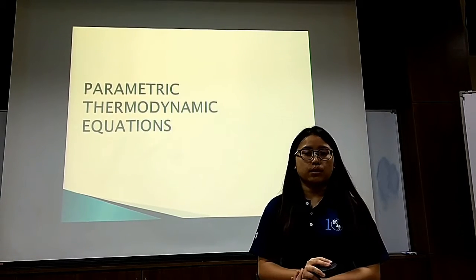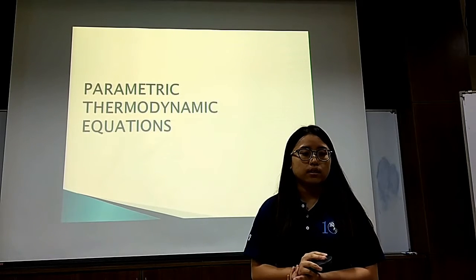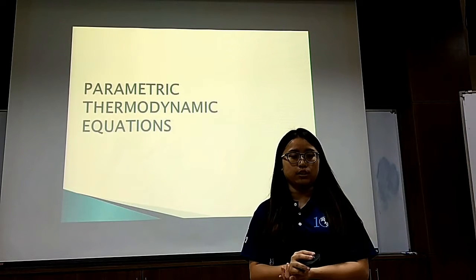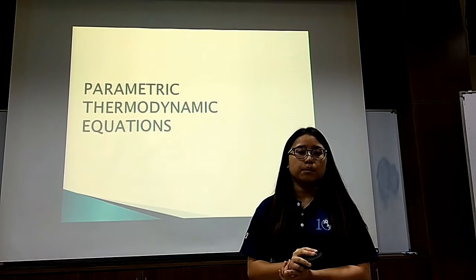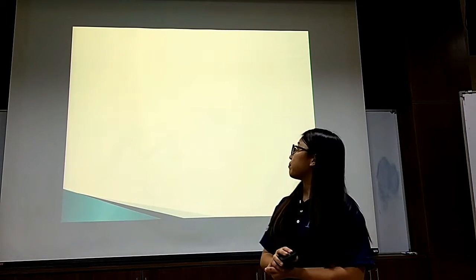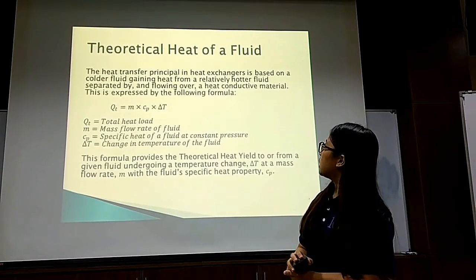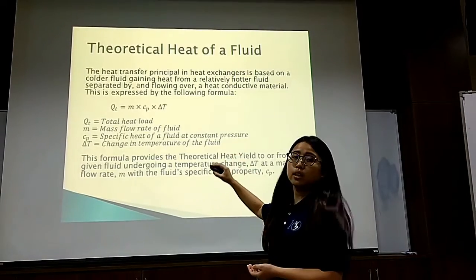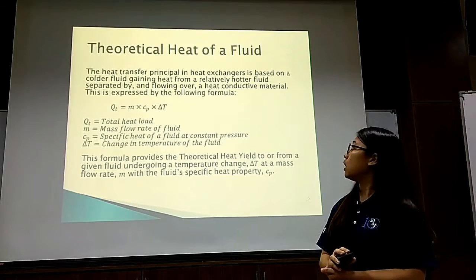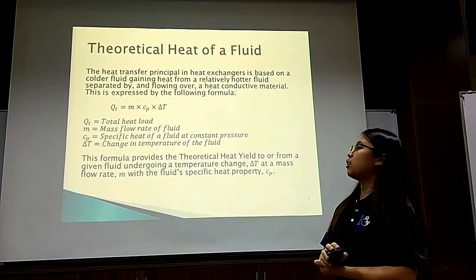I would like to explain the parametric thermodynamic equation that defines the nature and performance of a heat exchanger for any given application. The calculation is to select the most suitable product for the specific application. The theoretical heat of the fluid is given by the formula: total heat load Q equals the mass flow rate of the fluid times the specific heat at constant pressure times the change in temperature.